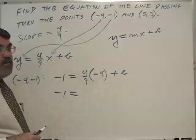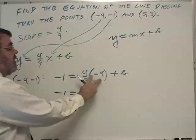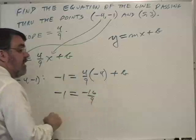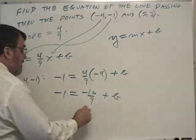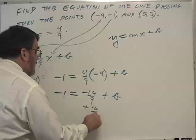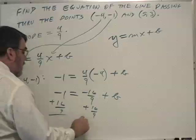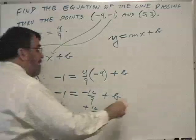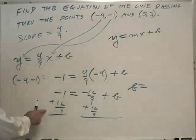At least not this one. What is negative 4 times 4 ninths? Well, negative 4 is a numerator. So I have negative 4 of those. That makes it negative 16 ninths plus b. And to solve for b, I need to add 16 ninths to both sides. So b is going to be minus 1 plus 16 ninths.